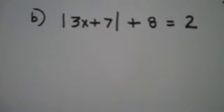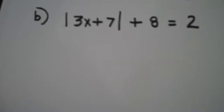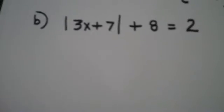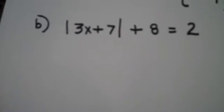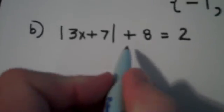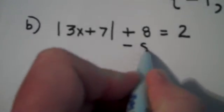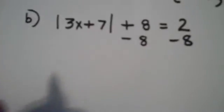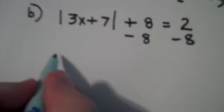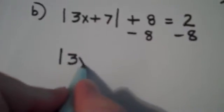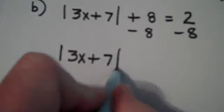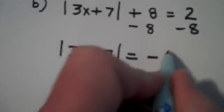The first thing you do when you're solving an absolute value equation is you need to get the absolute value bars alone so that you can actually interpret what's happening in the problem. So my first step here is to subtract 8 from both sides of the equation. That gives me absolute value of 3x plus 7 is equal to a negative 6.